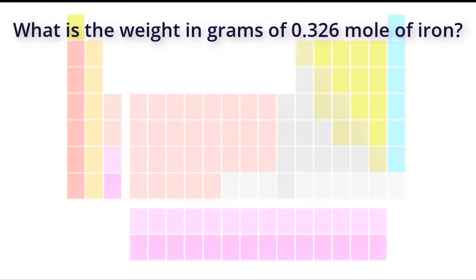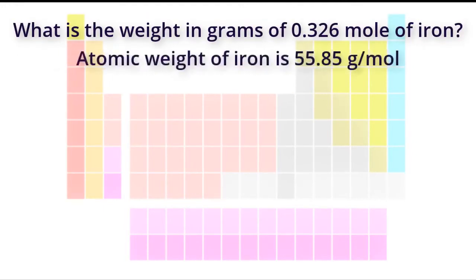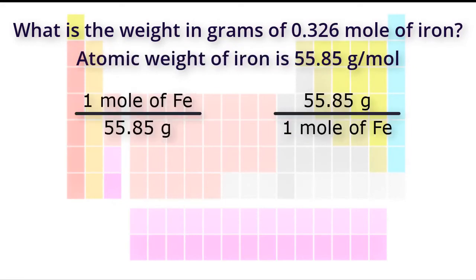What is the weight in grams of 0.326 moles of iron? We know that the atomic weight of iron is 55.85 grams per mole, so the conversion factor to use is either one mole of iron per 55.85 grams, or 55.85 grams per one mole of iron. To convert moles of iron to grams of iron, we need to use the appropriate conversion factor.